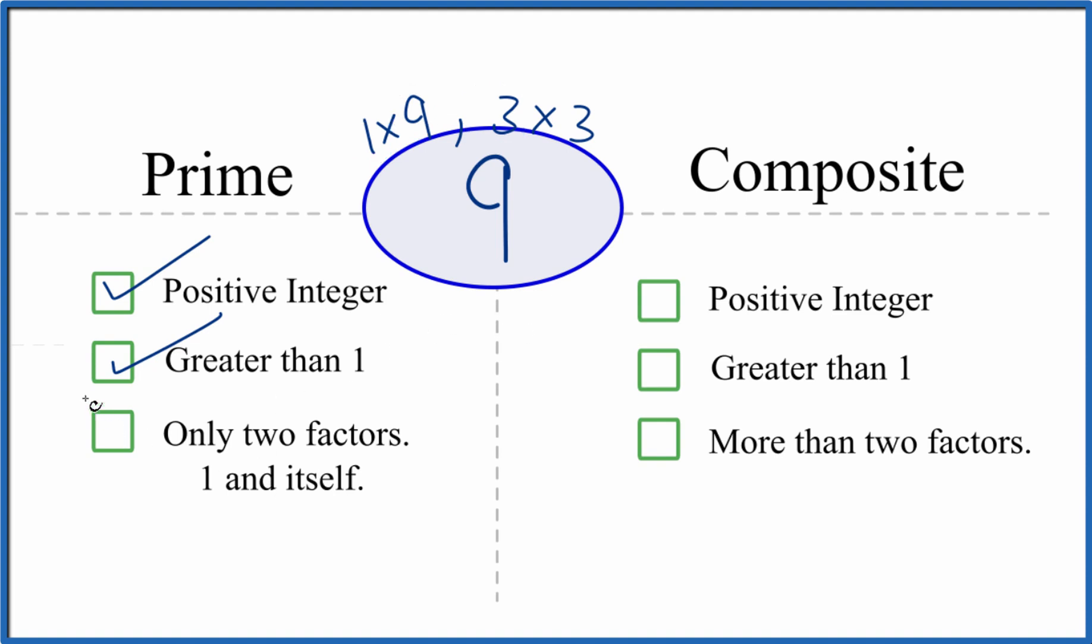We have more than 2 factors, so 9 can't be prime because we don't have only 2, we have more than 2. But is 9 a composite number? Because it's a positive integer, it's greater than 1, and we have more than 2 factors—we have 4 factors—that means that 9 is a composite number. This is Dr. B looking at whether 9 is prime or composite. It's composite.